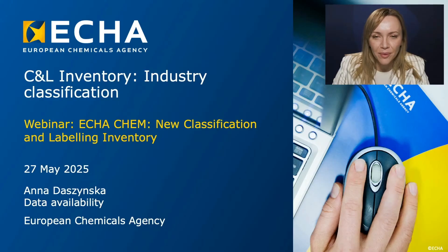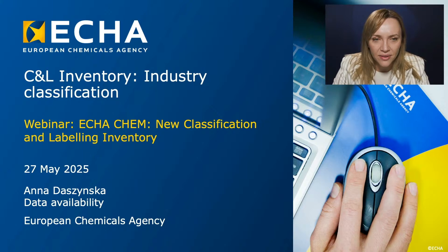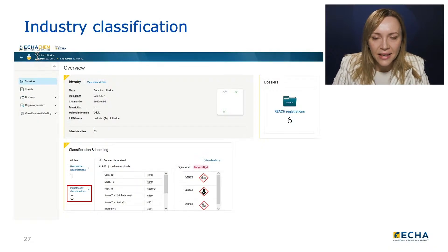Hello, my name is Anna Daszyńska, and I work in the team developing our chemicals database EkaChem. I am responsible for the Classification and Labelling Inventory. I will focus on industry classifications and explain the concepts behind the new way of displaying CNL information from REACH registrations and CLP notifications. Let's take a look at the substance overview page where we see how many classifications are available. For our example substance, there are five industry classifications.